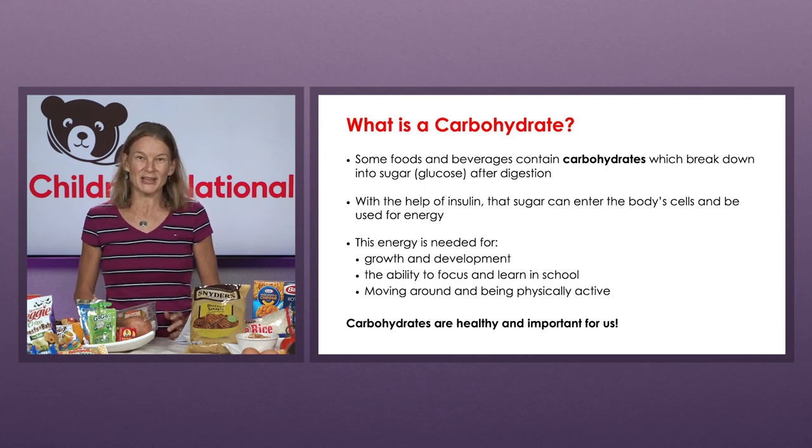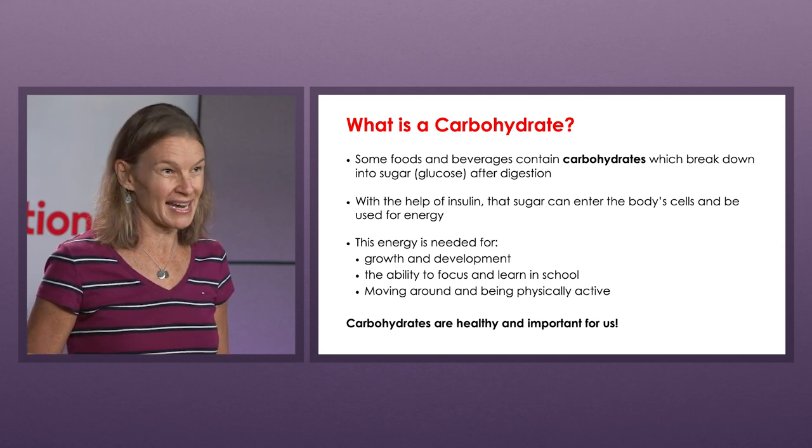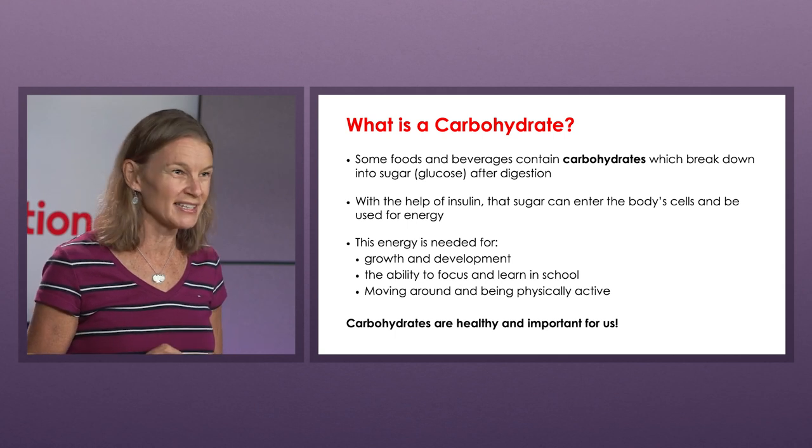The first thing we need to talk about before we figure out how to calculate insulin is which foods have carbs. When it comes to healthy eating, it's important to eat a variety of foods. You need your fruits, your veggies, your protein foods, and some kind of fiber. You need lots of healthy foods to make it balanced — it's important to have a colorful plate. But you also need those carbs and protein foods to keep your energy up. So let's first talk about which foods have carbs.